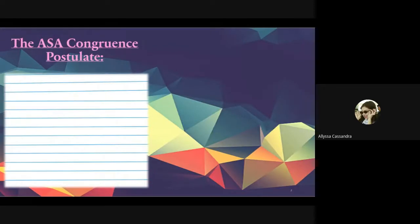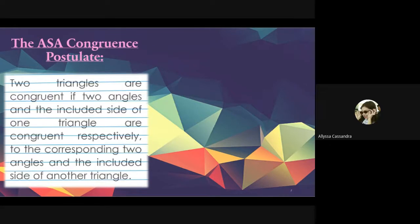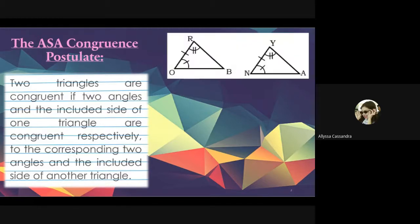Let us proceed to the ASA congruence postulate. Two triangles are congruent if two angles and the included side of one triangle are congruent respectively to the corresponding two angles and the included side of another triangle. For ASA, we look first for angle, then the included side, then angle.